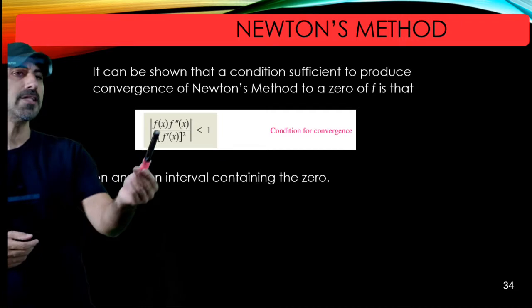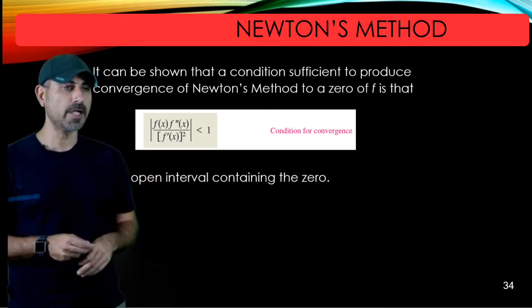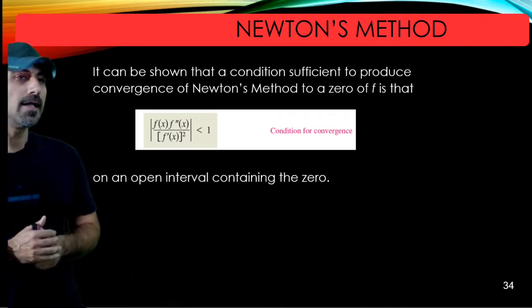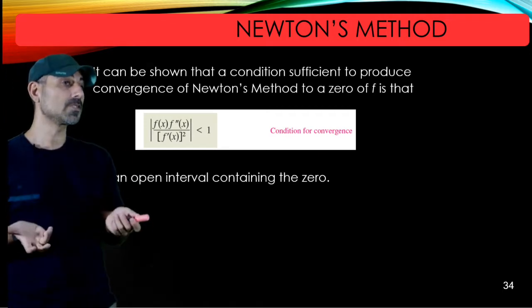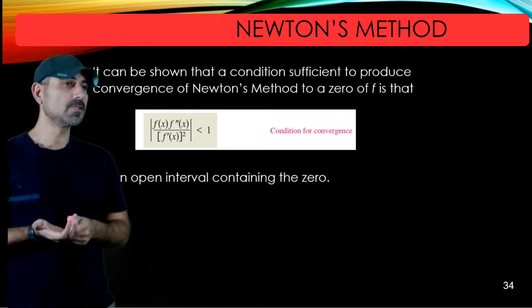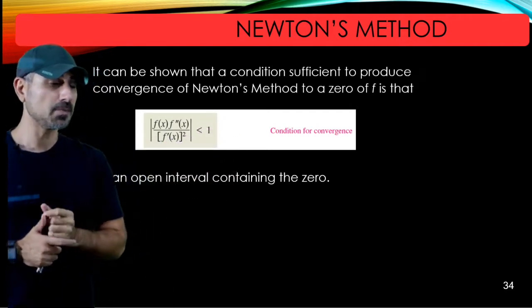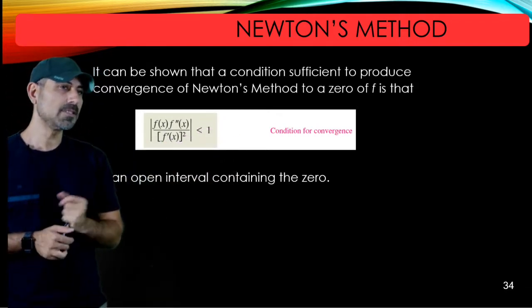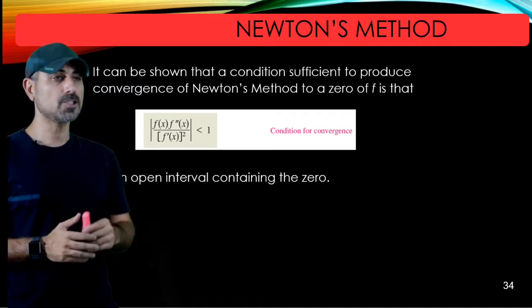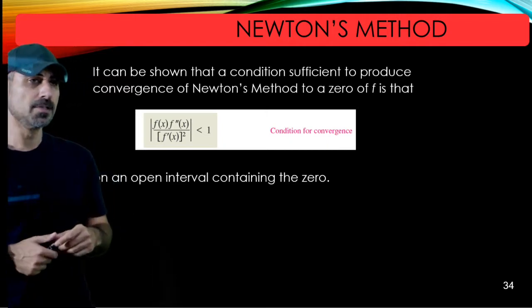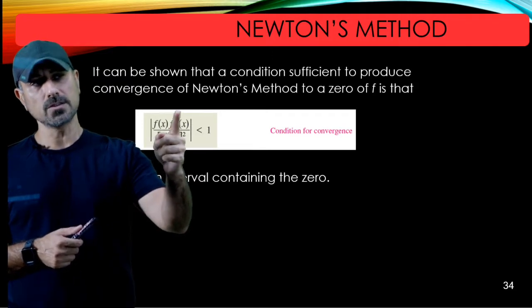Let me remind you about this slide. In general, you can always check |f(x)f''(x)|/|f'(x)|² < 1. This would probably give you a good interval for the condition for convergence. If you choose your x outside of this interval, then the convergence is not going to work. This is a good reality check to start with.